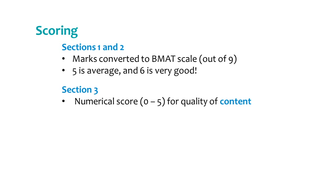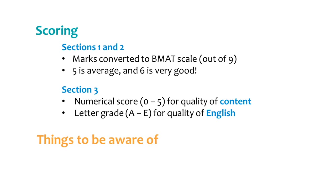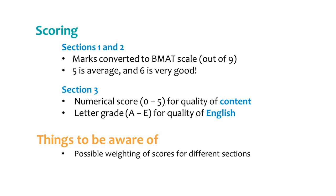For Section 3, your score will be made up of a numerical score ranging from 0 to 5 depending on the quality of the content of your essay, and a letter grade from A to E for the fluency and quality of written English. Some universities assign different weightings to different sections of the BMAT — for example, for the Oxford Biomedical Sciences course, sections 1 and 2 are weighted twice as heavily as the essay section. It's also useful to know how your BMAT score will be used in the application, as some universities use it to select candidates for interview, while others use it to decide which candidates get offers.